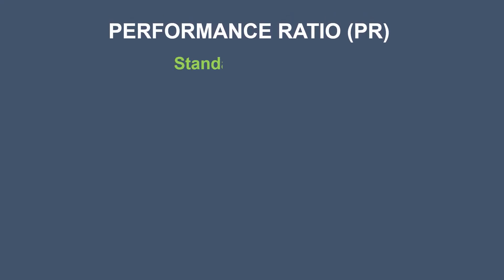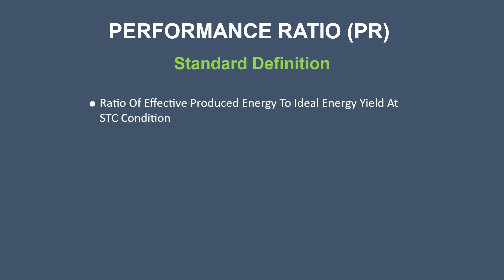So what is performance ratio, or PR, for solar PV power systems? PR is the ratio of effective produced energy to ideal energy yield at STC condition. As it is a ratio, it is unitless, and globally it is denoted as a percentage value.